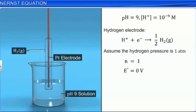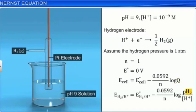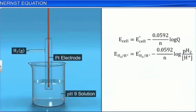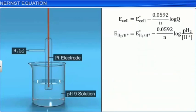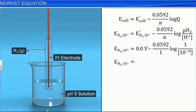Now, we can substitute this information into the Nernst equation. From the equation for the hydrogen electrode, we see that Q equals H2 over H plus. By evaluating the equation, we find that the electrode potential is minus 0.531 volts.